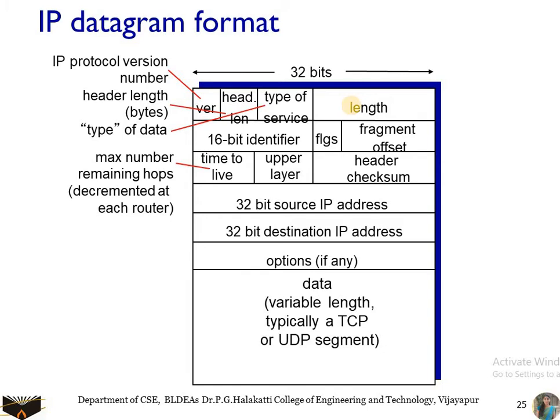Next we have the time to live (TTL). This field ensures that datagrams do not circulate forever in the network. It is decremented by 1 each time the datagram is processed by a router. When it reaches the next host, the TTL value is again decreased by 1. If the TTL field reaches 0, the datagram is dropped from the network.